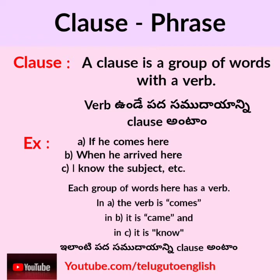Clause. A clause is a group of words with a verb. For example: 'if he comes here,' 'when he arrived here,' 'I know the subject.' Each group of words here has a verb.